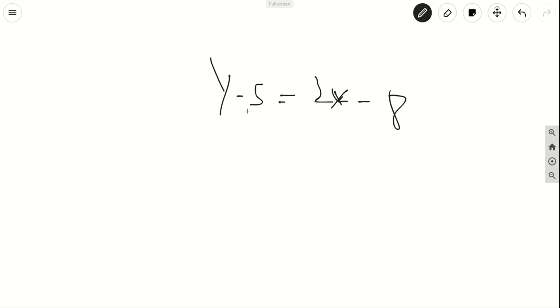Here you solve for y. So you add 5 on both sides. And you get, as your final answer, y equals 2x minus 3.